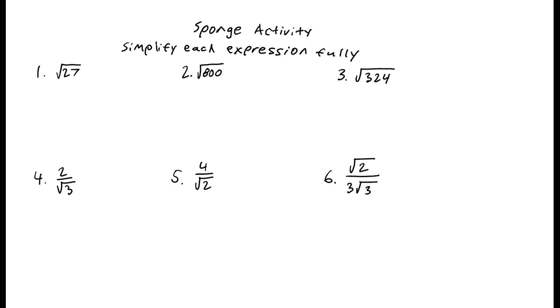Now time for the sponge activity. Simplify each expression fully, either by simplifying the square root or rationalizing the denominator — they must be simplified fully. Remember, you need to get all of these right to earn a bonus point, but make sure to attempt them all. Take notes on the entire lesson, take a picture of your notes with the sponge activity fully attempted, and submit it to your backpack. Have a good night.